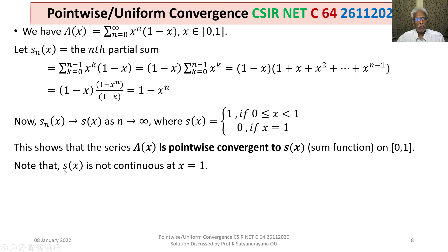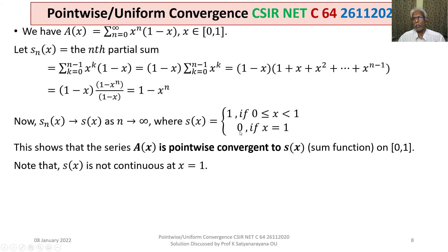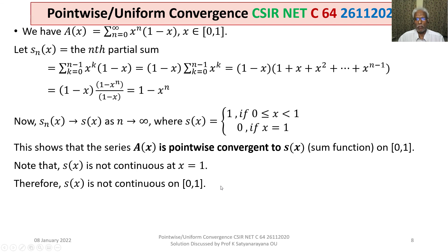S(x) is discontinuous at x=1, the right endpoint of the interval. The left-hand limit as x→1⁻ equals 1, whereas the value of the function at x=1 is 0. There is no right-hand limit to consider. Since the left-hand limit does not equal the function value at x=1, S(x) is not continuous there — hence it is a discontinuous function on [0, 1].